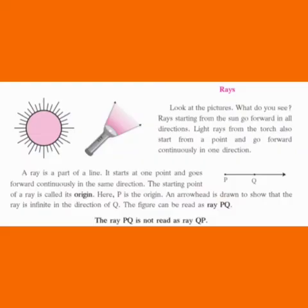Now, next topic is Rays. Look at the pictures. What do you see? Rays starting from the sun go forward in all directions. Light rays from the torch also start from a point and go forward continuously in one direction.